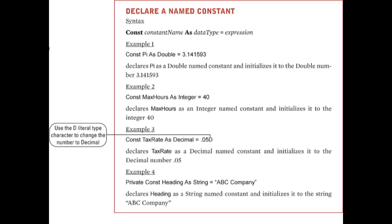Example 3 shows the constant tax rate as a decimal equal to 0.05. The capital D here is the literal type character, which forces the constant to be initialized as a decimal type. So besides declaring the type as decimal, you also need to have the D character after the number itself — for example, 0.05D.